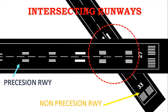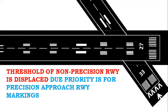For example, runway 27 is a precision runway and runway 33 is a non-precision runway. At the intersection of both runways, as shown with the dotted red circle, we must show the markings of the more important runway only. Markings of runway 27 are continuous whereas the markings of runway 33 are interrupted. To avoid confusion, the threshold of non-precision runway 33 is displaced for better visual guidance for the pilot.